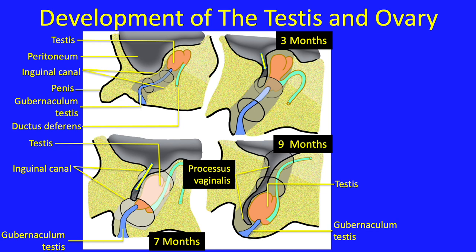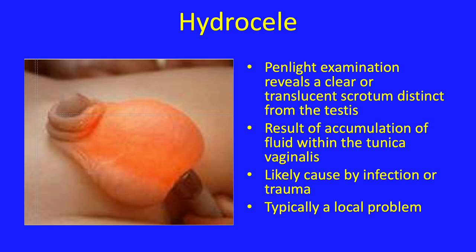If it is fluid, it is known as a hydrocele; if it is blood, the inclusion is known as a hematocele. If the hydrocele or hematocele do not resolve on their own, they may lead to hernia development. Here is an example of how a hydrocele presents in a child. The penlight examination reveals a clear or translucent scrotum distinct from the testis. This results from accumulation of fluid within the tunica vaginalis, likely caused by infection or trauma. It is typically a local problem — the fluid is constrained to the scrotum.